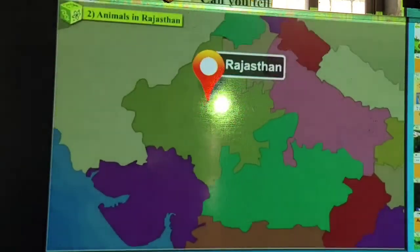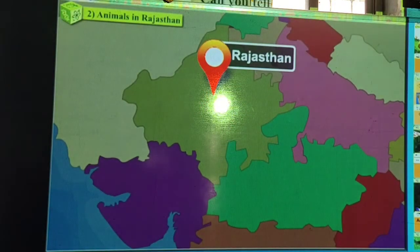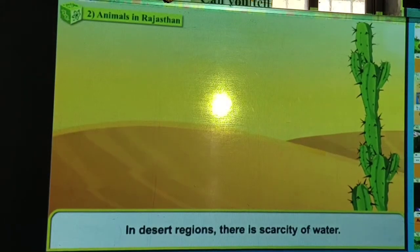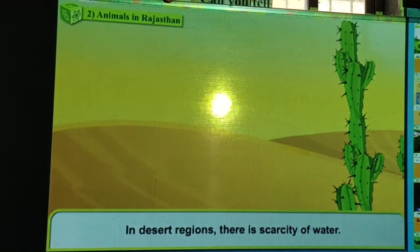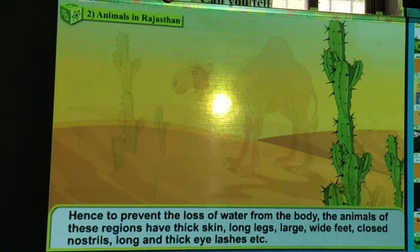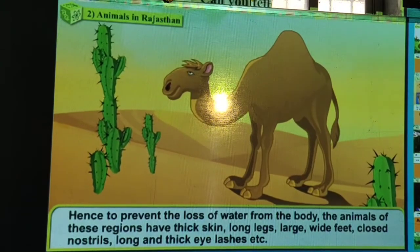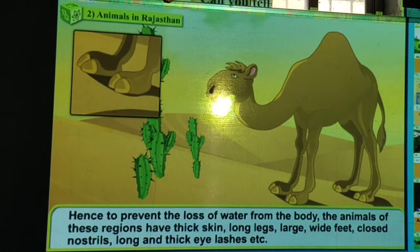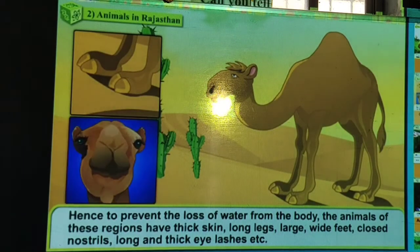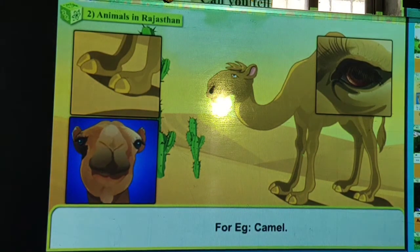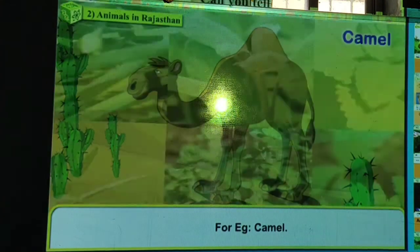Animals in Rajasthan — for example, the camel. To prevent the loss of water from the body, the animals of these regions have thick skin, long legs, large wide feet, and closed nostrils, so they can easily survive in the dry area.